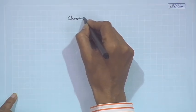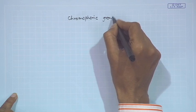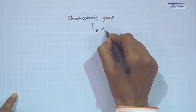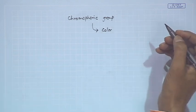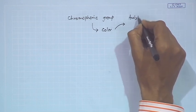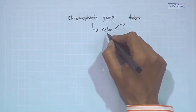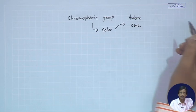Welcome to this class on the continuation of spectrochemical methods, where we will be looking at chromophoric groups, which are essential to generate color in solution. We can generate solution color to estimate the unknown amount of analyte by looking at the color intensity, which is directly proportional to the concentration as per Beer's law.